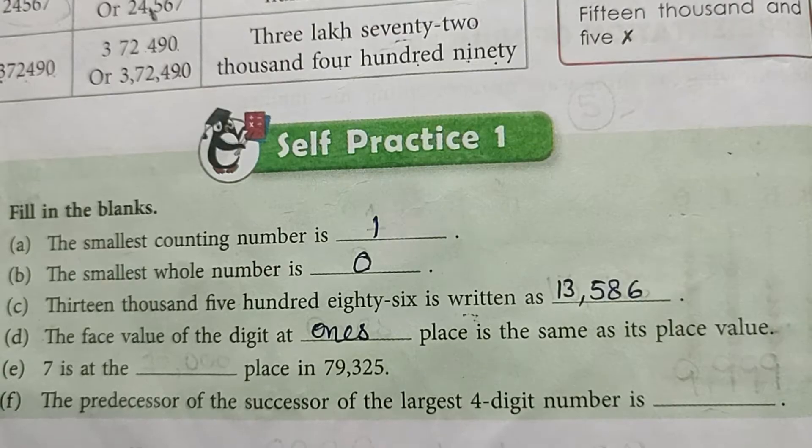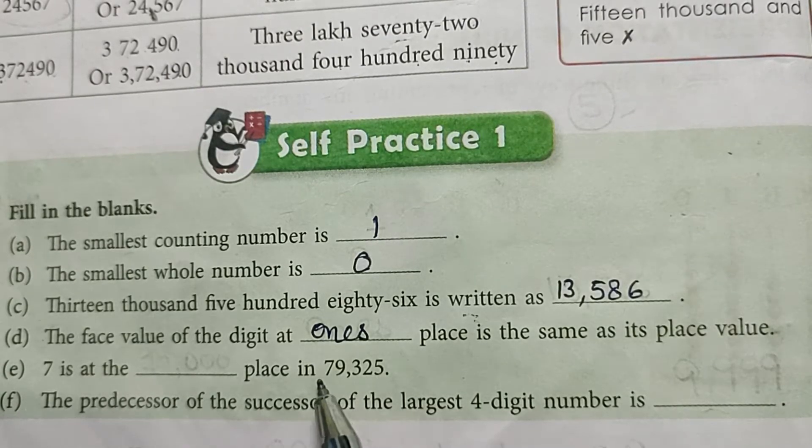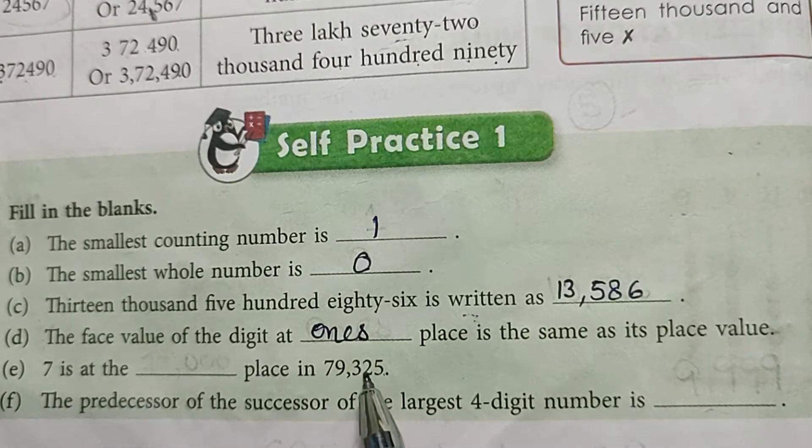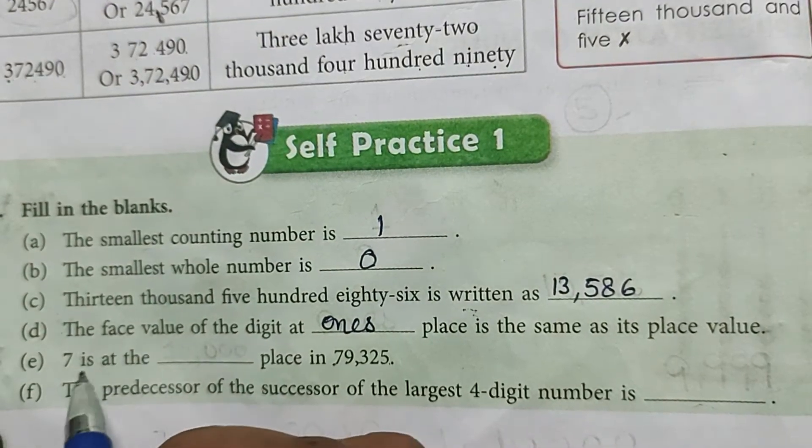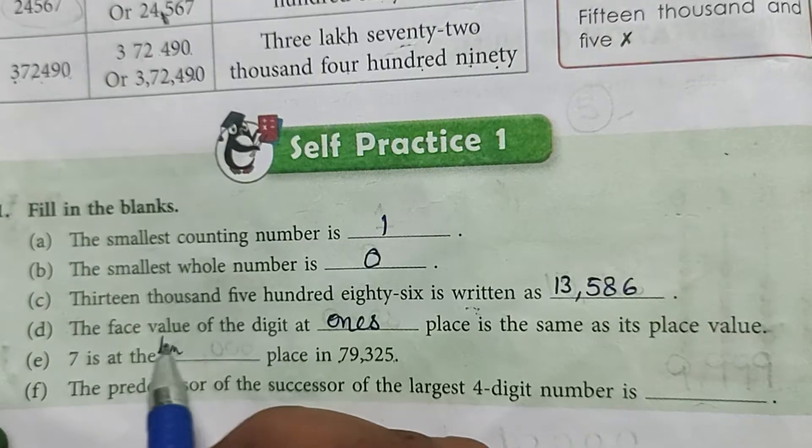Seven is at the dash place in 79,325. Which place is seven at? Ones, tens, hundreds, thousands, ten thousands. So seven is at ten thousands place in 79,325.